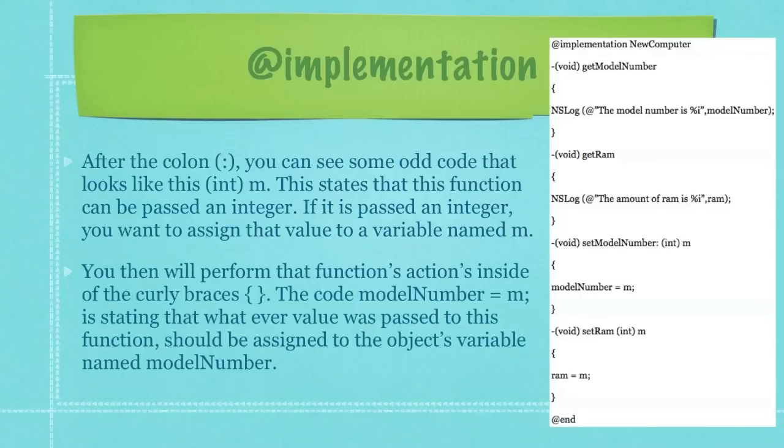You then will perform that function's actions inside of the curly braces. The code modelNumber = m followed by a semicolon is stating that whatever value was passed to this function should be assigned to the object's variable named modelNumber.